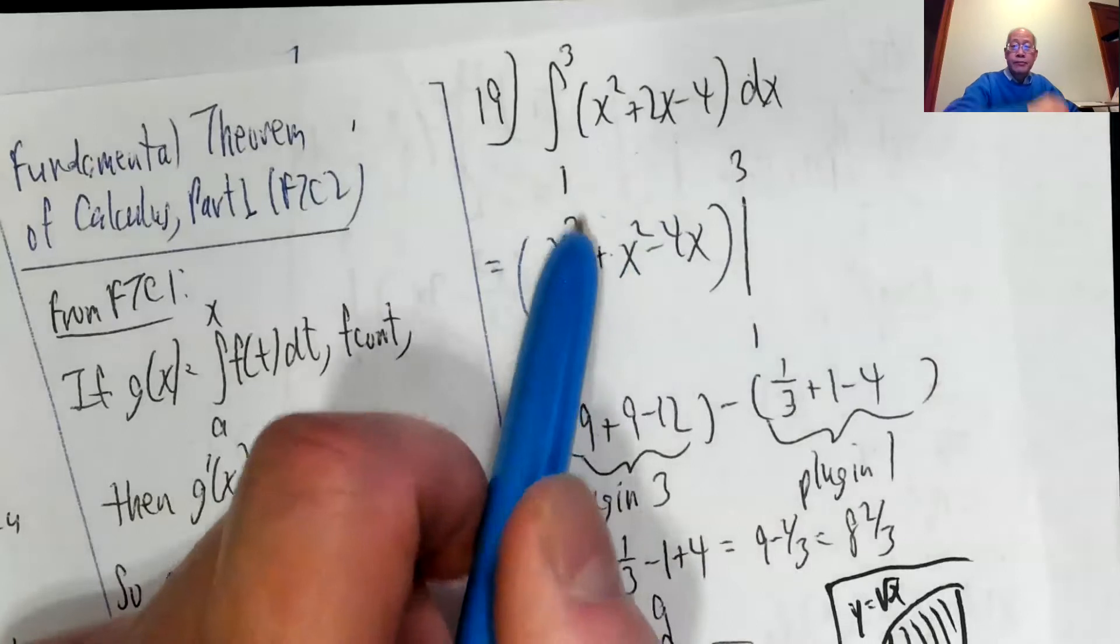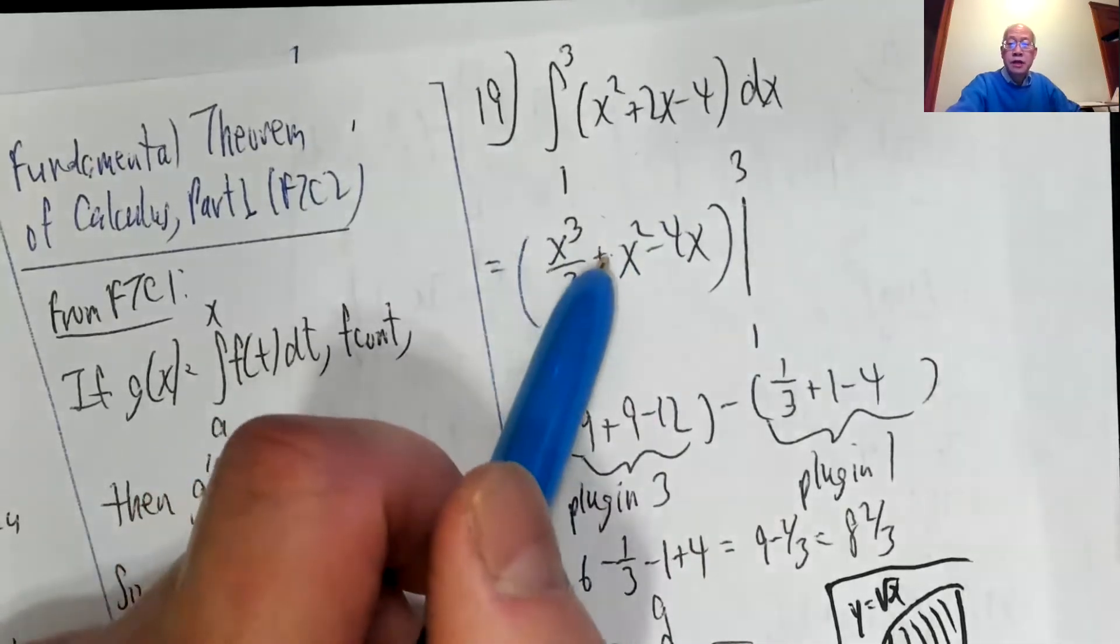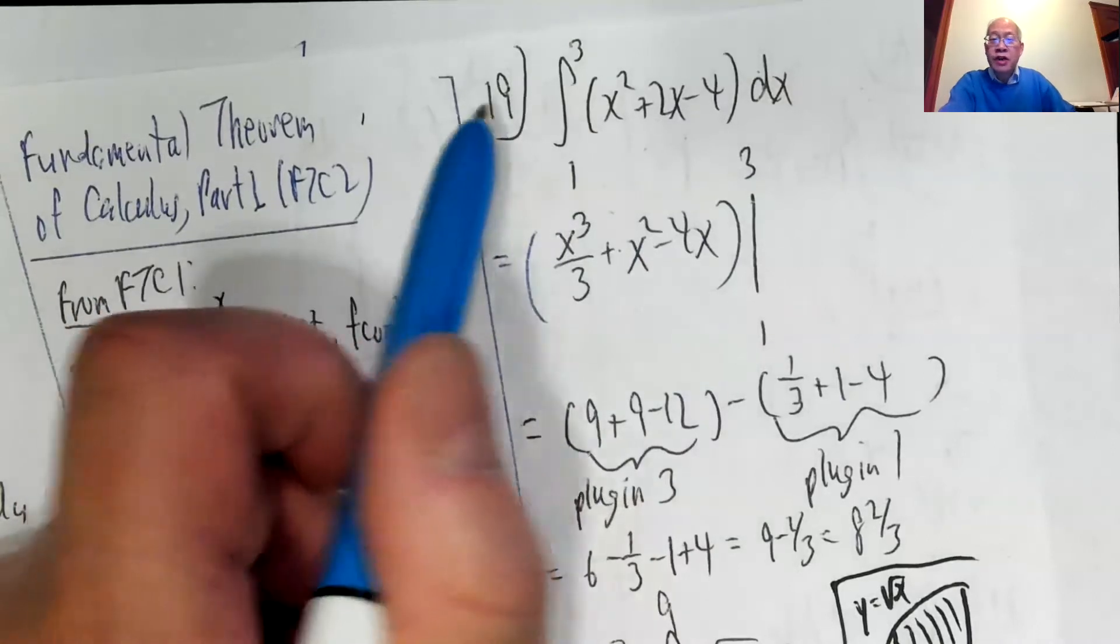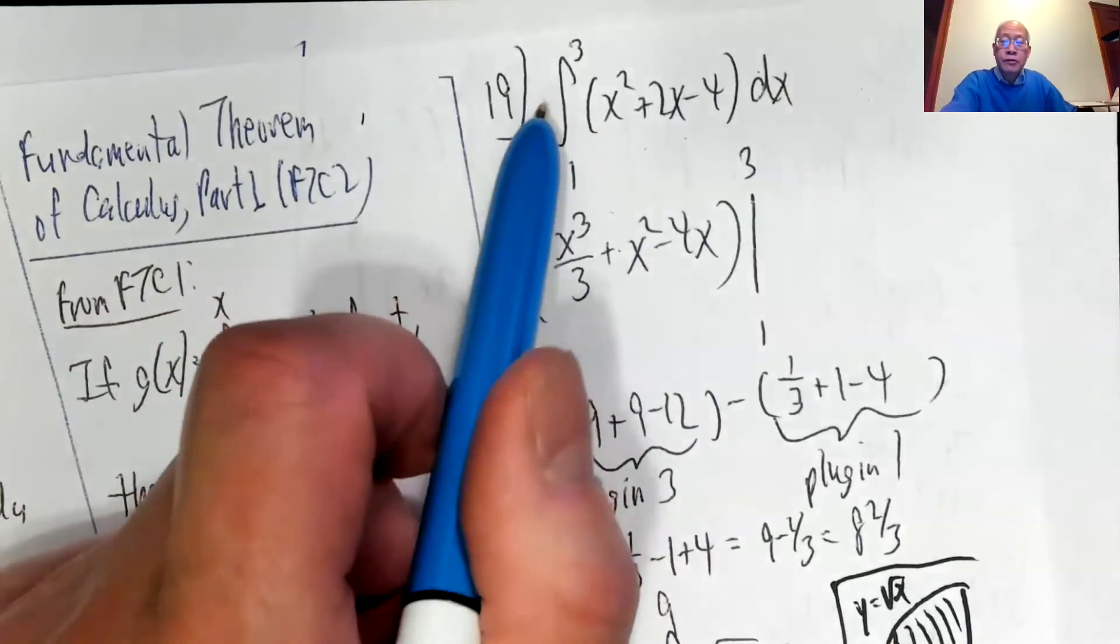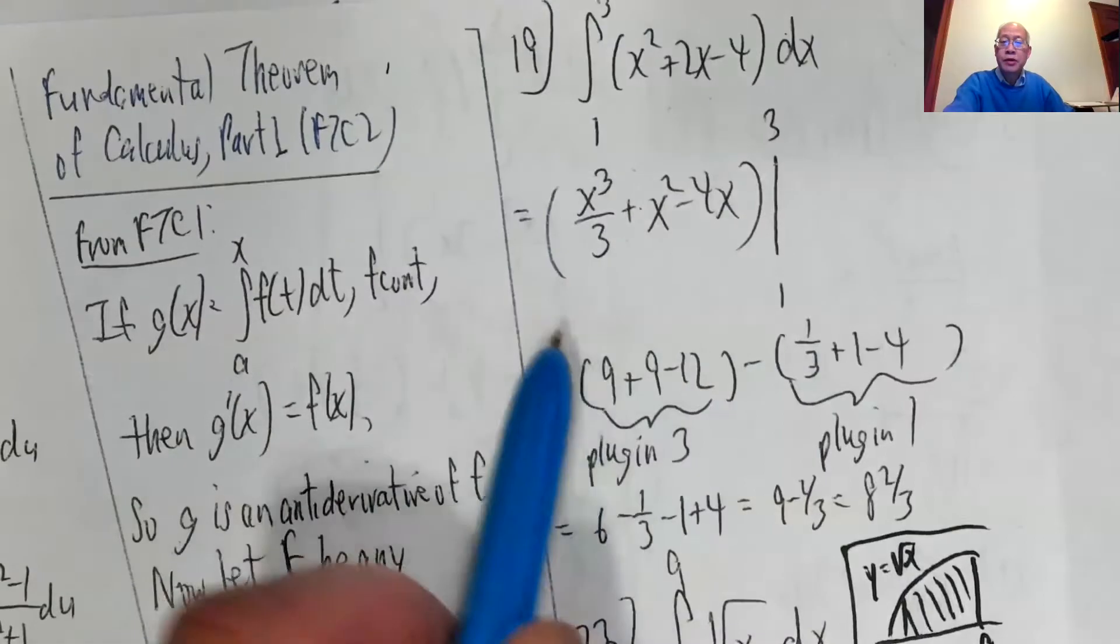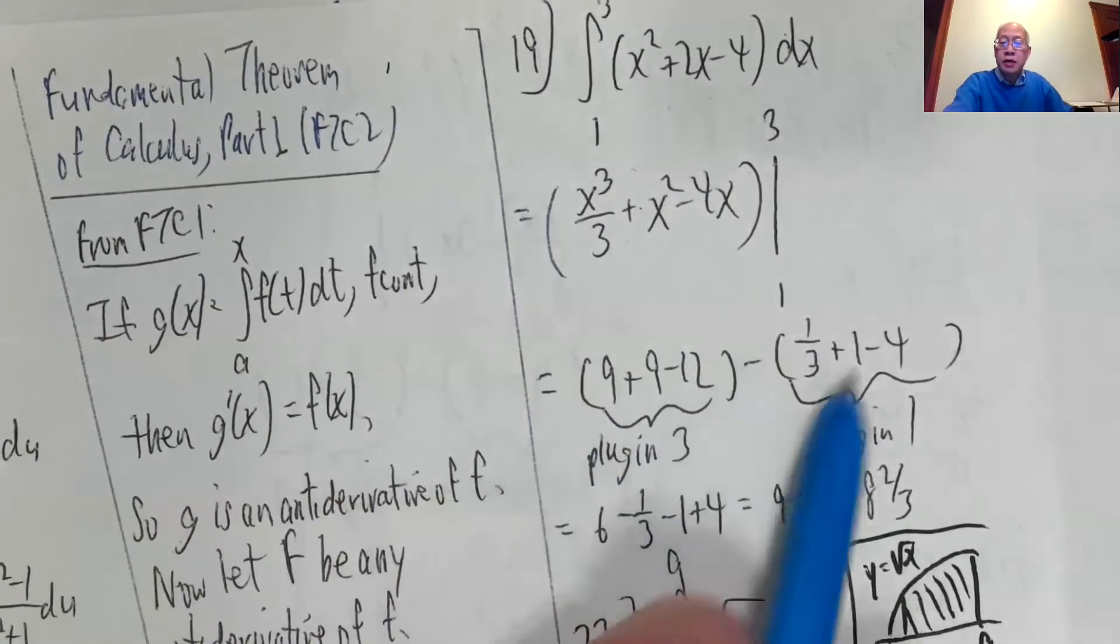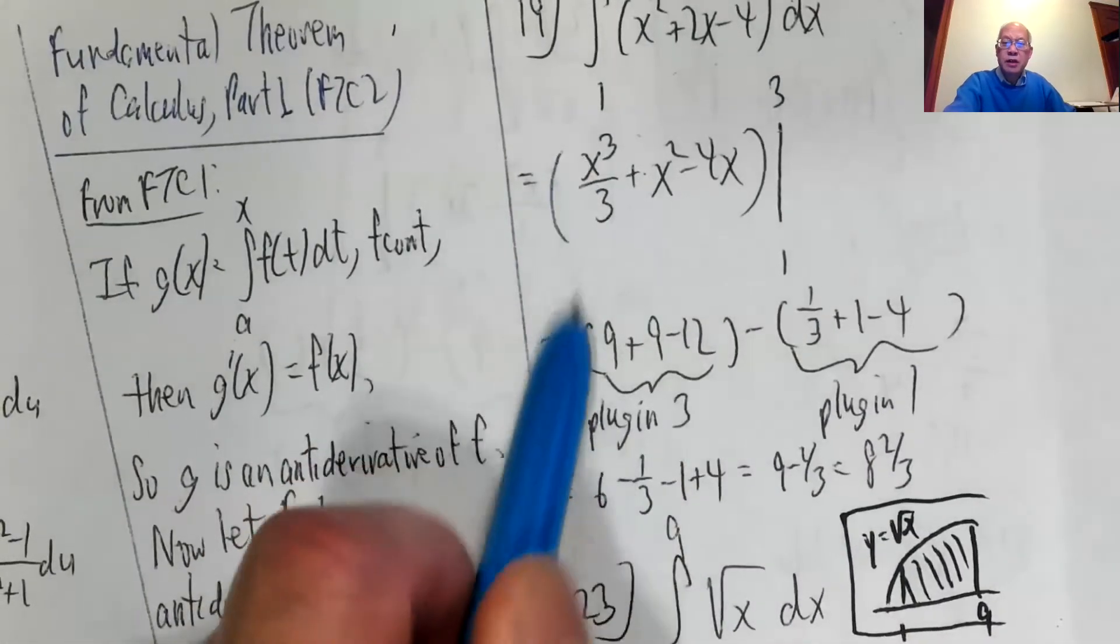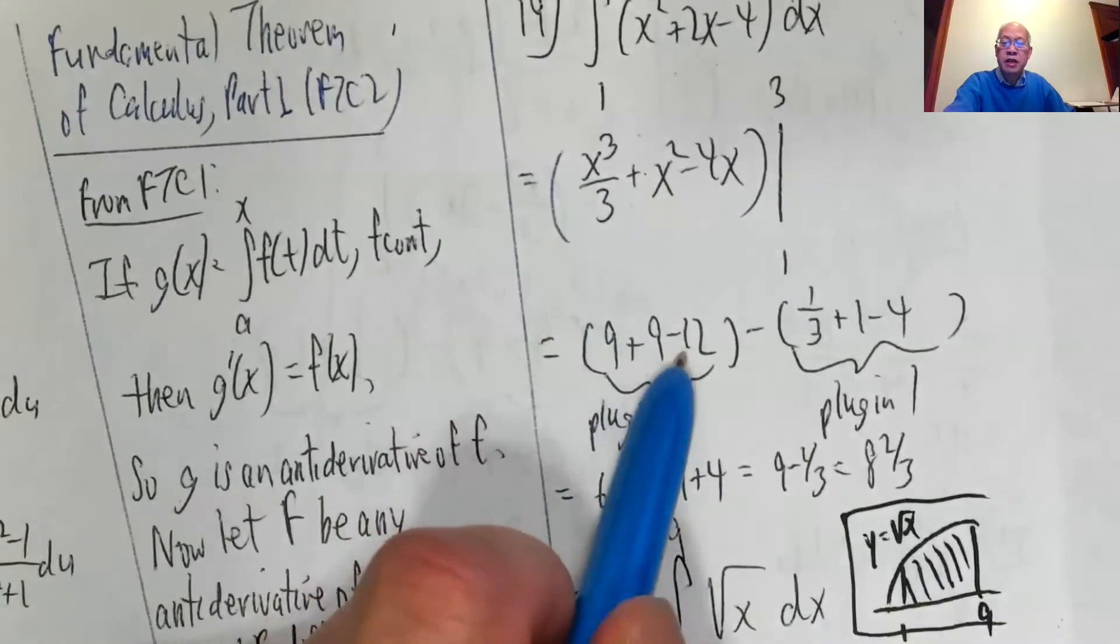So we integrate x cubed over three plus two x squared over two minus four x. By convention, the one to three, the funny looking s, it migrates over to the right side and straightens out. So one to three like this. You plug in three, you plug in one and subtract. So plug in three. 27 divided by three is nine. Three squared is nine minus four times three.